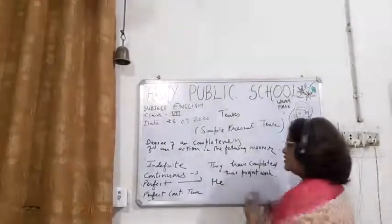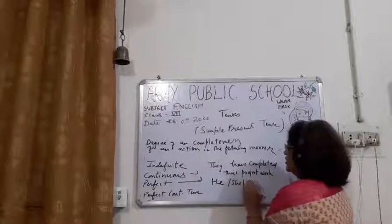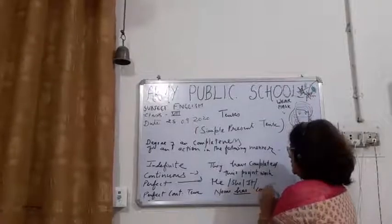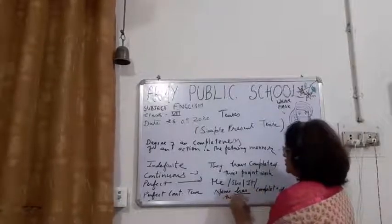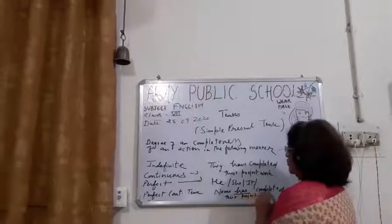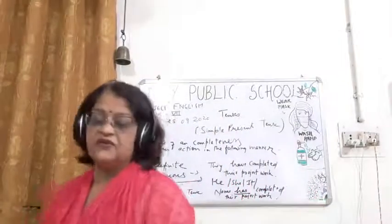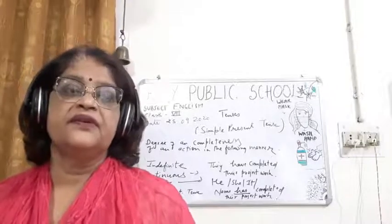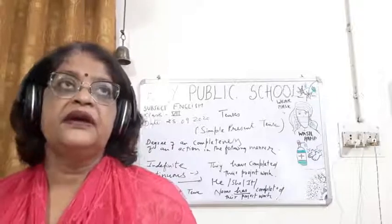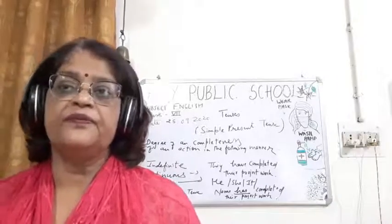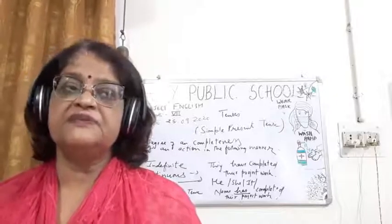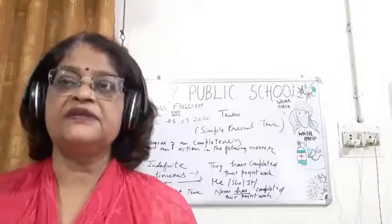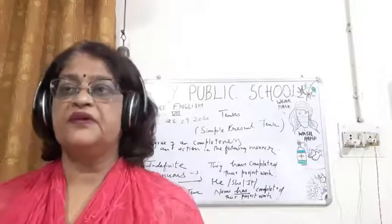With the third person singular — he, she, it, or any name — what do we use? We use 'has'. We always use the third form of the verb. Please remember, in perfect tenses with third person singular we always write 'has': he has, she has, it has, Ravi has, the bird has — and we always add the third form of the verb. Has or have plus V3. In past perfect, had plus V3. In future perfect, will have plus V3. We will always have the third form of the verb.